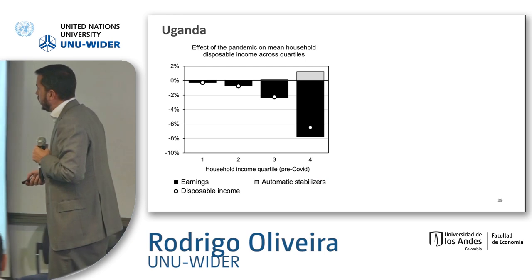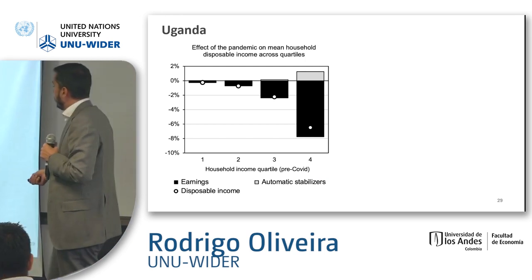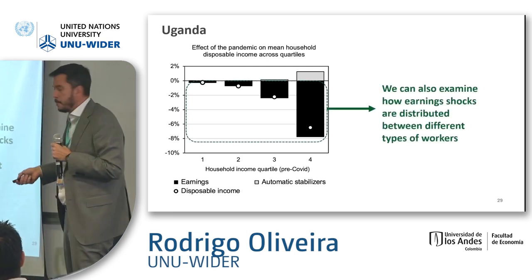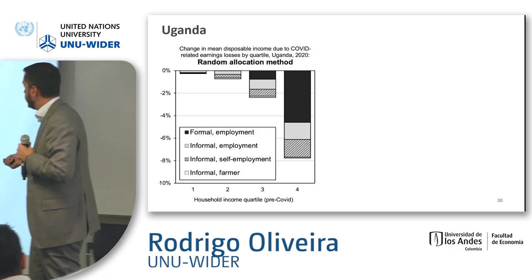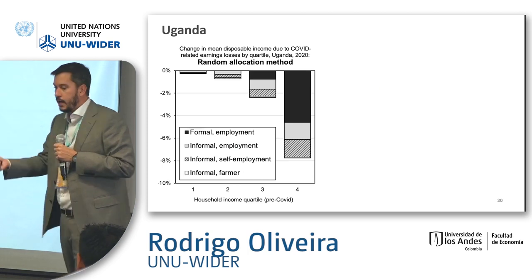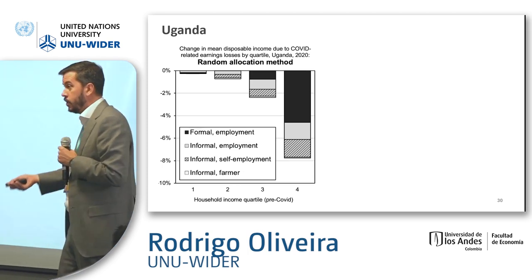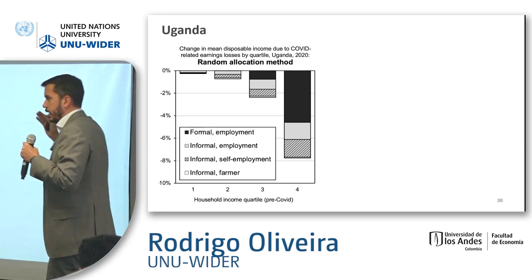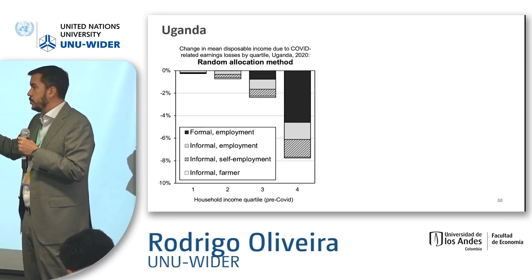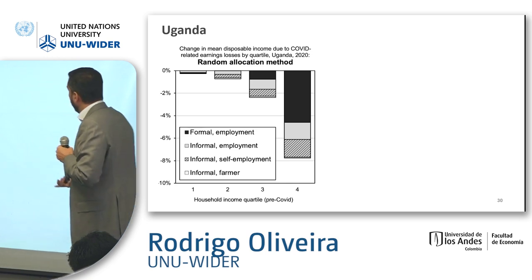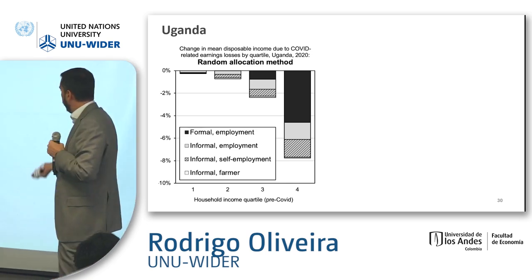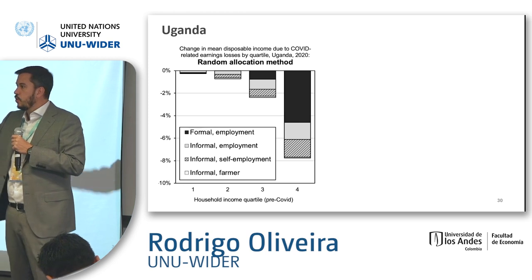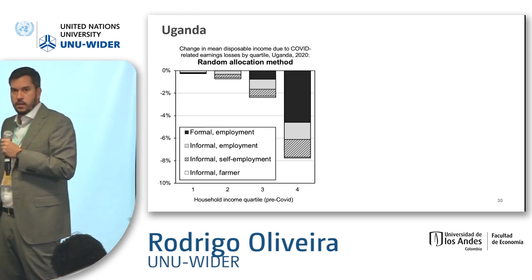For Uganda, which didn't have any COVID policy in 2020, we can also observe that automatic stabilizers only work for the top earners. We had access to World Bank phone survey data only for Uganda, allowing us to compare the two methods of allocating people to unemployment — the main way we simulate the pandemic impact. The random allocation method randomly selects 10% of people in a sector that lost income, removes their income in the micro data.